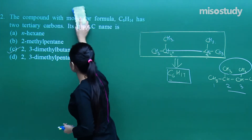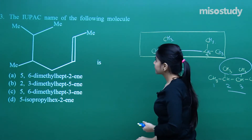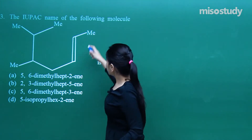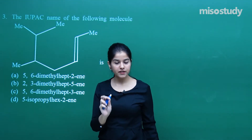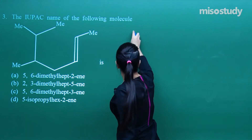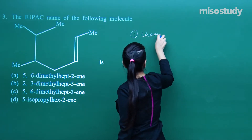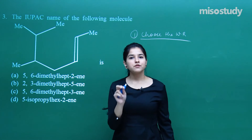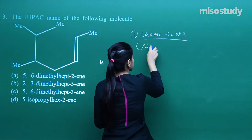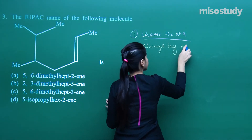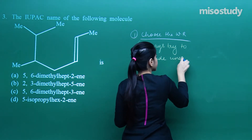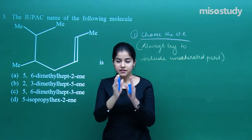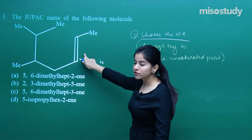Now let us have a look at the next question — IUPAC name of the following molecule. Again you need to find out the IUPAC name. If you look very carefully, first of all what you need to do is include the double bond in the word root. Choosing the word root is our first thing in the case of IUPAC naming — the word root will always contain the double bond, so always try to include the unsaturated part in the word root.